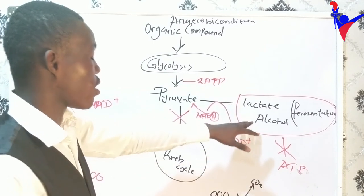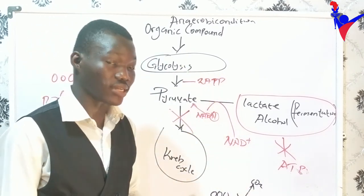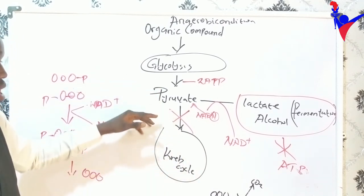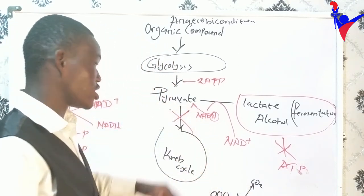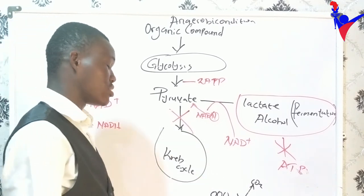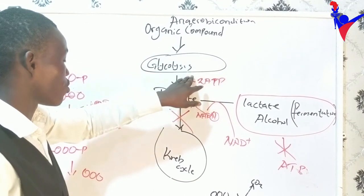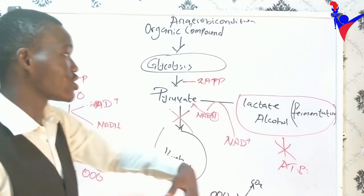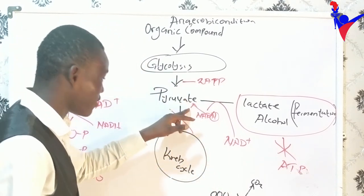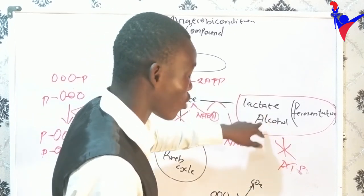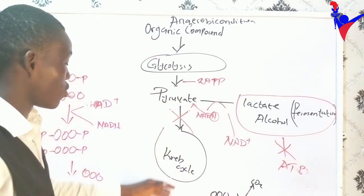So that is the fate of pyruvate under anaerobic conditions — either lactic acid fermentation or alcohol fermentation. In our next class, we will look at the fate of pyruvate under aerobic conditions, where it goes through the Krebs cycle to give us much more energy — about 36 ATP. Under anaerobic conditions, the net ATP from glycolysis is only 2 ATP, because by the time pyruvate goes to lactate or alcohol, no more ATP is produced. We still need to undergo the Krebs cycle and the electron transport chain to get more ATP.